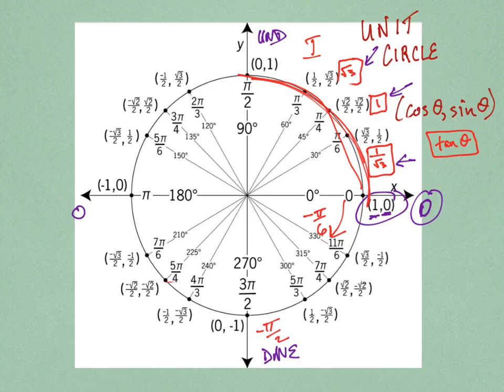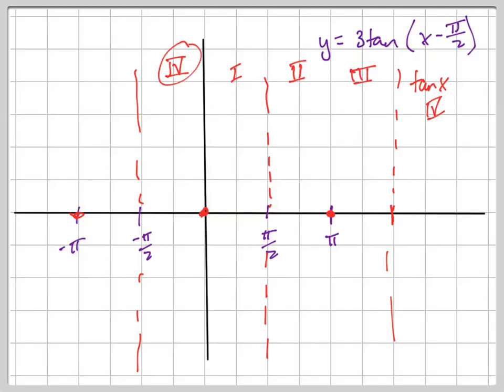So going left there's your fourth quadrant, going right there's your fourth quadrant. In the first quadrant, tangent is sine over cosine — both positive — so what's your tangent going to be, positive or negative? Positive. Right, it's positive, so your graph goes up. And in the fourth quadrant? Negative. It's negative, so your graph goes down that way.